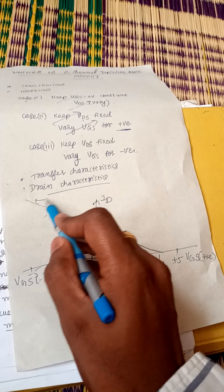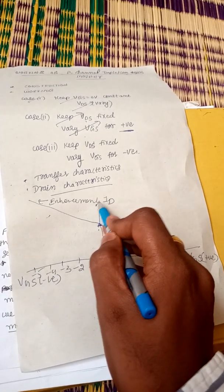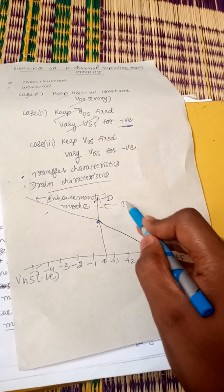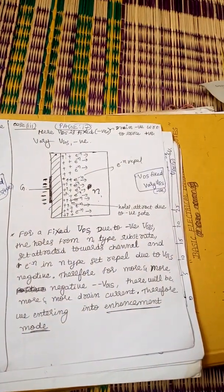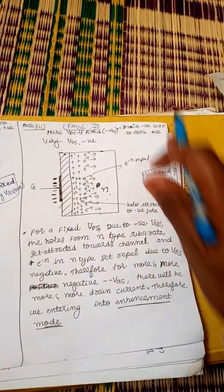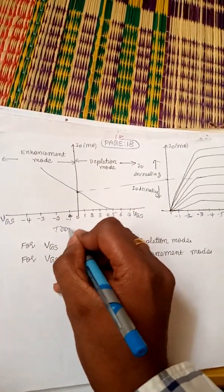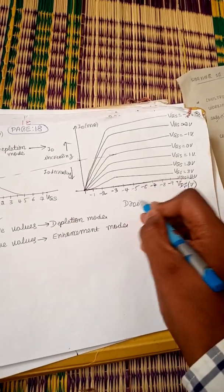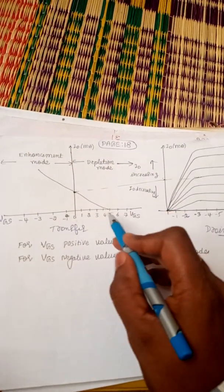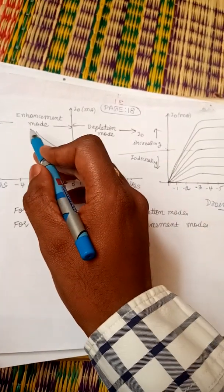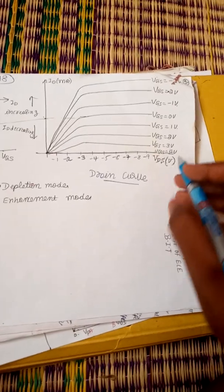Making the gate more and more negative leads to accumulation of more holes in the channel and drain current increases — this is called enhancement mode. When gate is positive and drain current decreases, that is called depletion mode. In the transfer curve: when Vgs is more and more positive, drain current decreases; when Vgs is more and more negative, drain current increases.